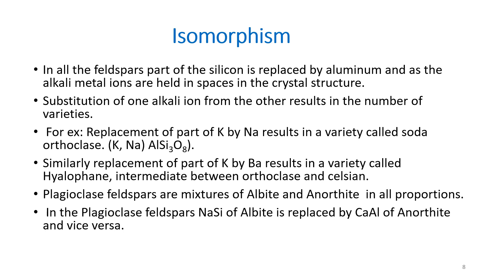Plagioclase feldspars are mixtures of albite and anorthite in all proportions; composition ranges from albite to anorthite. In plagioclase feldspars, the sodium and silica of albite is replaced by calcium and aluminum of anorthite, and vice versa.